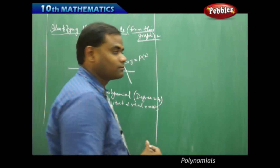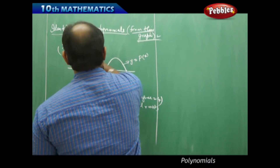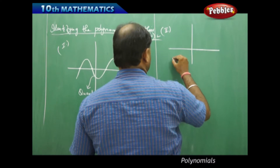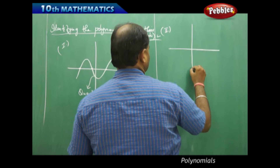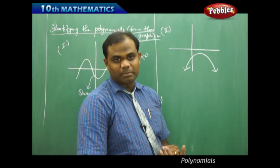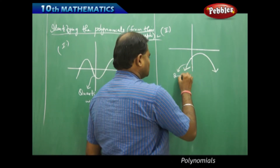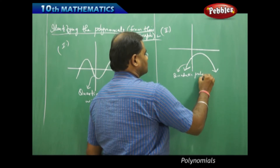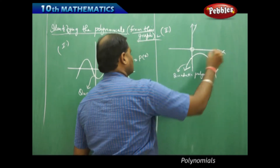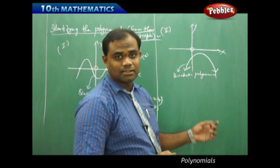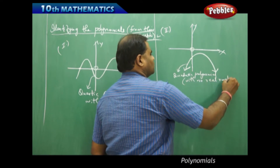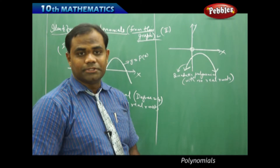Let's take another example. This graph is clearly an inverted parabola, so this is a quadratic polynomial. Because it doesn't cross the x-axis, it has no real roots. A quadratic polynomial with no real roots is how we understand this polynomial just by seeing its graph.